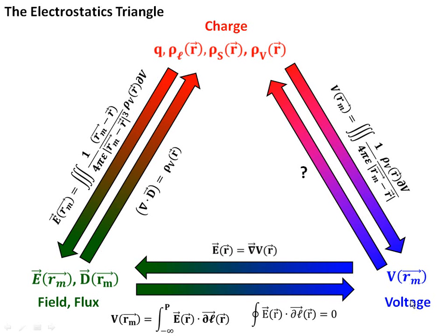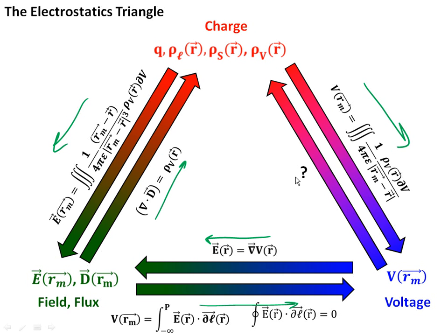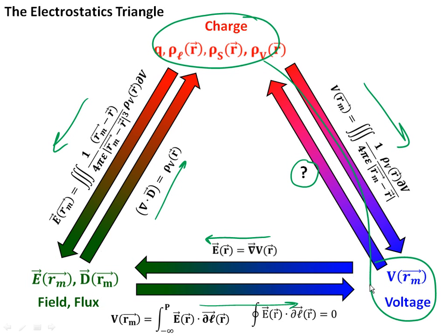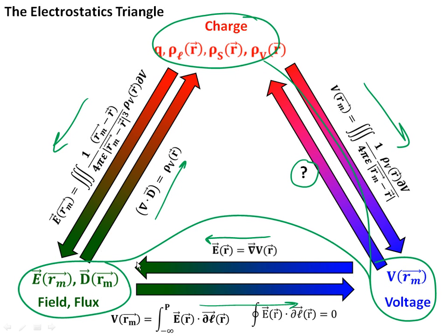We can now represent our electrostatics triangle more completely, with integrals going from charge to vector fields, charge to scalar fields, and vector fields to scalar fields on the outside. We also have differential operations from voltage to vector fields, scalar fields to vector fields, and now with divergence, from vector fields back to charge distributions. We only have one more thing to complete the triangle, which we'll cover in the next lecture. But first, let's go through an exercise: start with charge, calculate the voltage, go from voltage to the field, and then use the divergence operator to see if we get back to the original charge distribution.